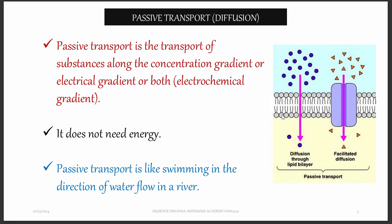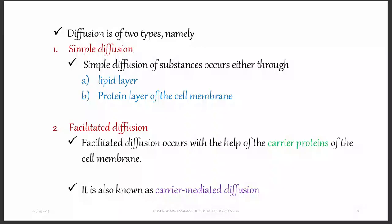Looking at the cell membrane: if it is thick, the rate of diffusion is going to be slow. If it is thin, it is going to be faster. Diffusion — or passive transport — can either be simple or facilitated. Simple diffusion can happen through the lipid layer or the protein layer, because the cell membrane has a lipid component, a protein component, and a carbohydrate component. Things can pass through the lipid itself without assistance, or they can pass through proteins in the cell membrane.